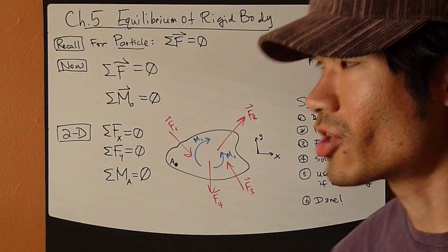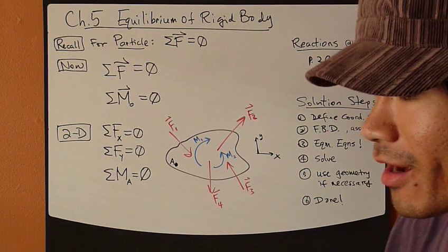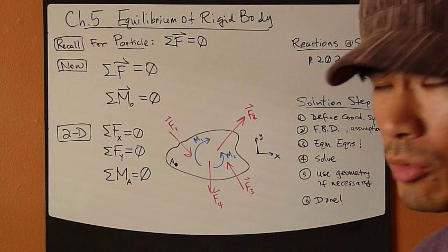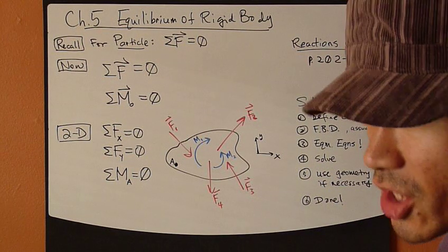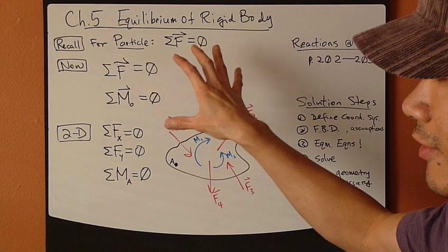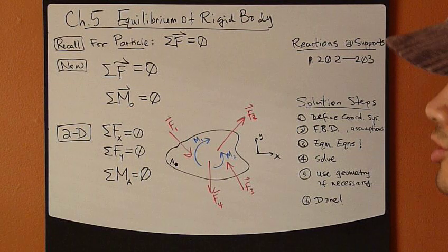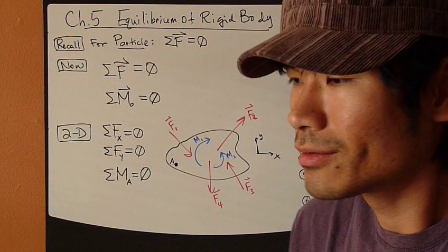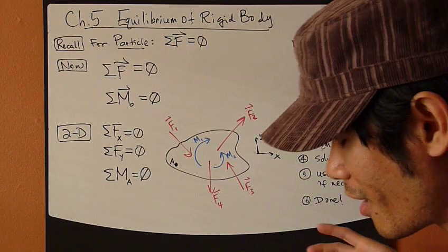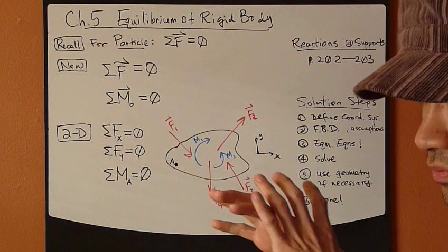Now we're ready to talk about equilibrium for a rigid body. The last chapter, Chapter 4, everything we discussed was getting ready for Chapter 5. We talked about moments, couple moments, all the equations, and simplifications of the moment-force system. All of that prepared us for this chapter. As soon as we've done all the preparations from Chapters 2, 3, and 4, this chapter is actually quite short, because the equations are really nothing new. We're just putting everything together to analyze a rigid body. This is a really important chapter, but everything we've done so far is equally important.